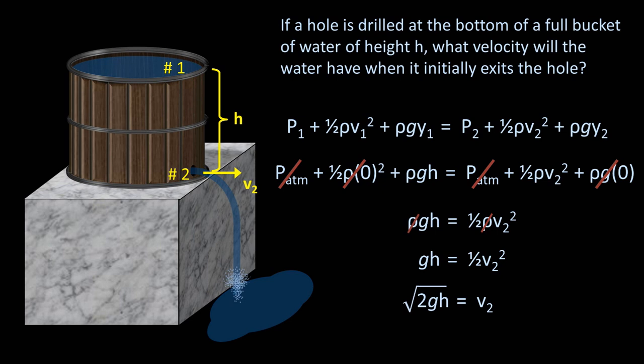This is historical trivia, but this solution is called Torricelli's theorem. Torricelli is the 17th century Italian physicist who invented the barometer and for whom the unit of torr is named after.